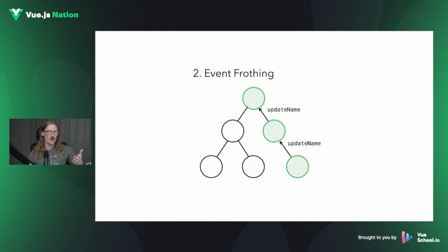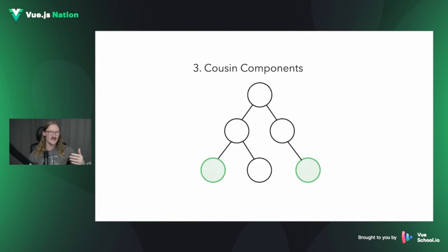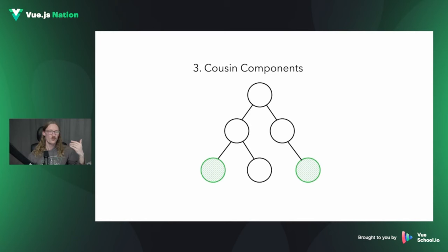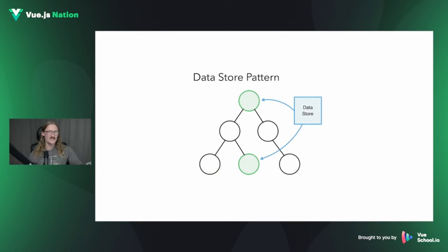We don't want prop drilling because it makes our app brittle — if we need to refactor we might not remember those intermediate layers. On the flip side, we also have event frothing, which is bubbling events up from a lower layer through several different layers of components — very similar to prop drilling but in the opposite direction. We also have cousin components, where we need to get state from one component all the way across to another without a simple parent-child relationship.